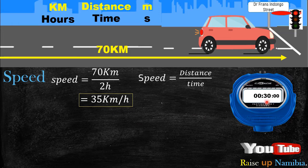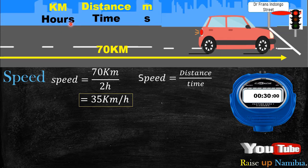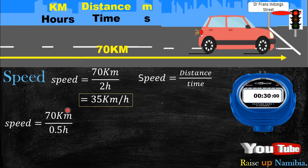What happens when your time changes to 30 minutes? Mike travels the same 70 kilometers, but this time he takes only 30 minutes instead of two hours. Remember: your distance is in kilometers, so your time must also be in hours. Since 30 minutes is not in hours, you need to convert it before substituting into the formula.